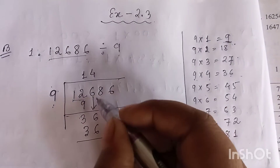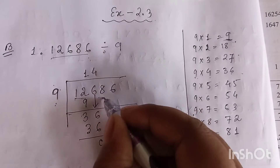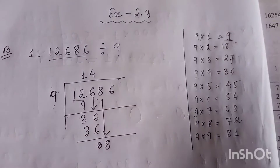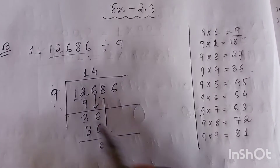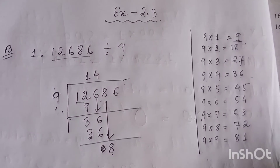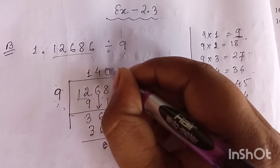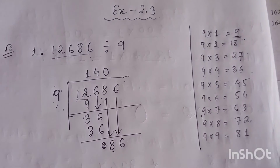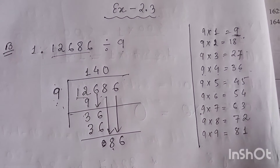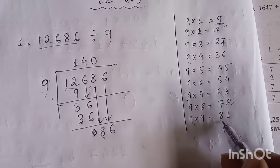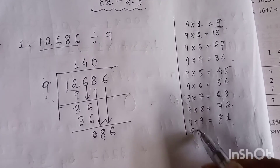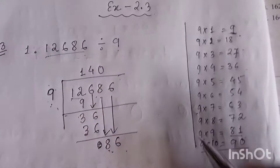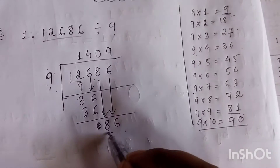Now we have 86. Nine nines are 81, and nine tens are 90 which is bigger than 86, so we use 81. Write 9 in the quotient, subtract 81 from 86, remainder 5. The quotient is 1,409 and the remainder is 5.